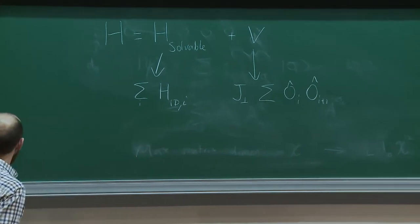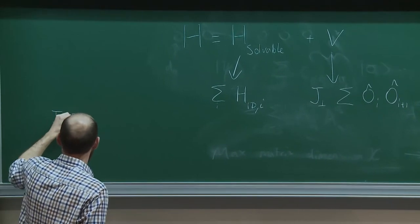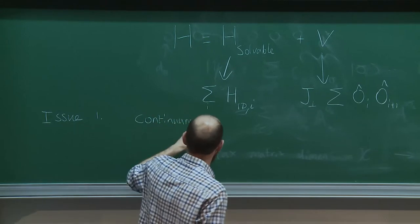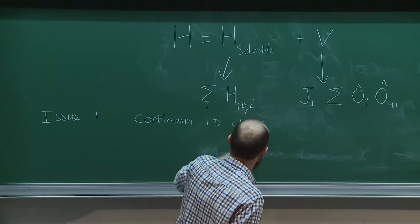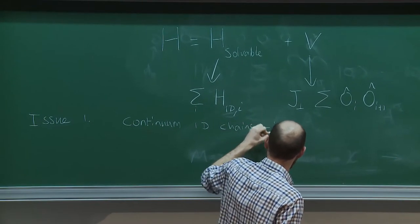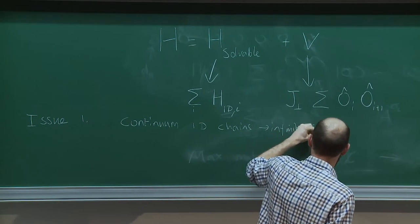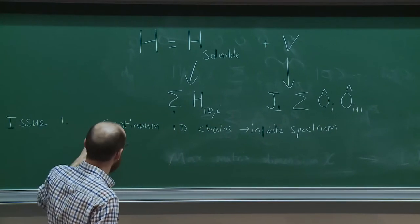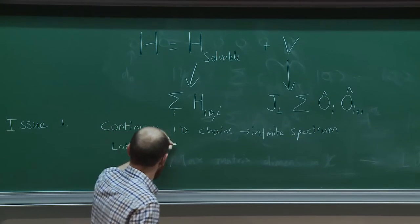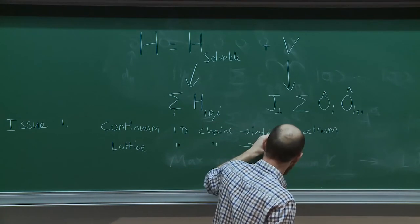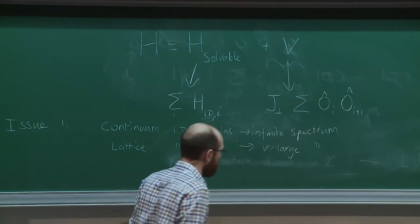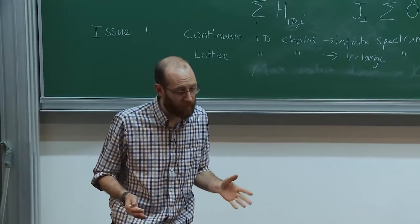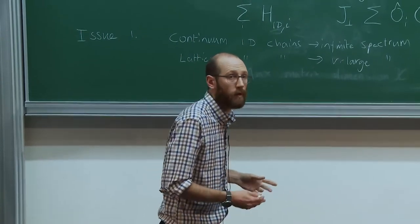This seems like a nice idea, but there are immediate issues. Issue one: continuum 1D theories or continuum chains will have an infinite spectrum. If we work with lattice chains, at long chain lengths they will have a very large spectrum. Neither of these is good because we need the local physical Hilbert space dimension to be finite at the very least, and the algorithms are more efficient if that's a smaller number.